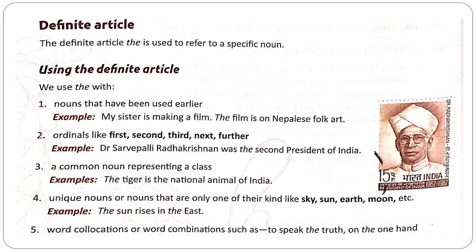The fourth use: unique nouns. Unique nouns are nouns that are only one of their kind, like sky, sun, earth, moon, etc. For example, 'The sun rises in the east.' Whatever is unique in this world — that is, one of its own kind, like sky, sun, moon — before all such unique nouns, we use THE.